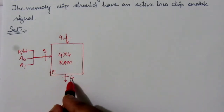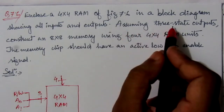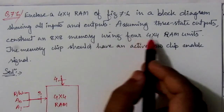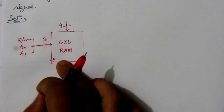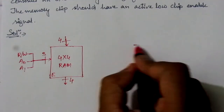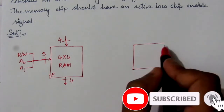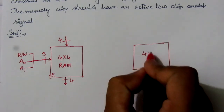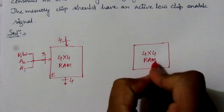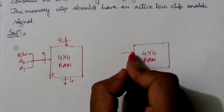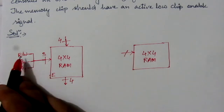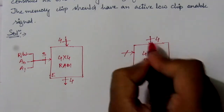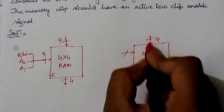The question states: assuming three-state outputs, construct an eight by eight memory using four four-by-four RAM units. So we need to draw another RAM unit. Here also we have a four by four RAM with three control inputs — one read/write signal and two address lines A0 and A1 — and four input data lines.